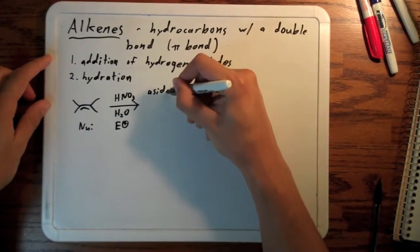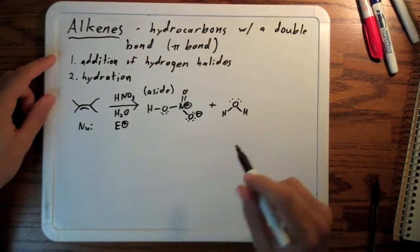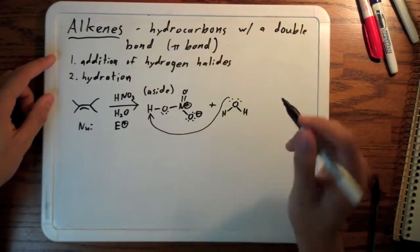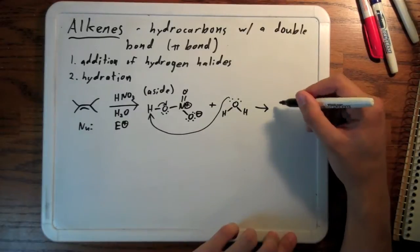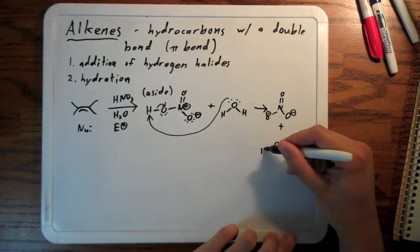As a side note, I want to show you some of what's happening here. The nitric acid is about as acidic as hydronium, so about half the protons are passed off to water to create nitrate and the hydronium ion.